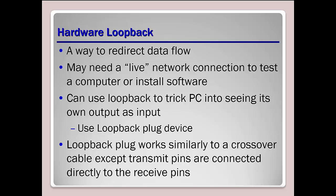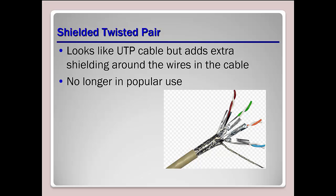Not really used as much anymore. A bit more on shielded twisted pair — instead of just having shielding around individual pairs, it shields all of the cables. This would be used in a place where there's going to be interference, to ensure that interference does not affect the data transferring over the cable.